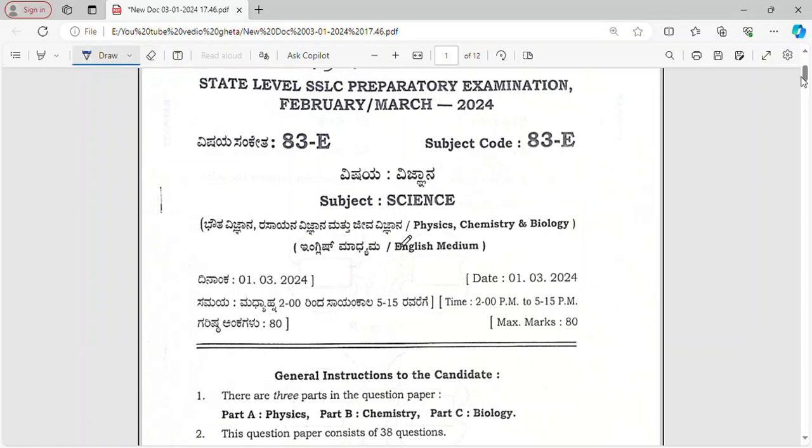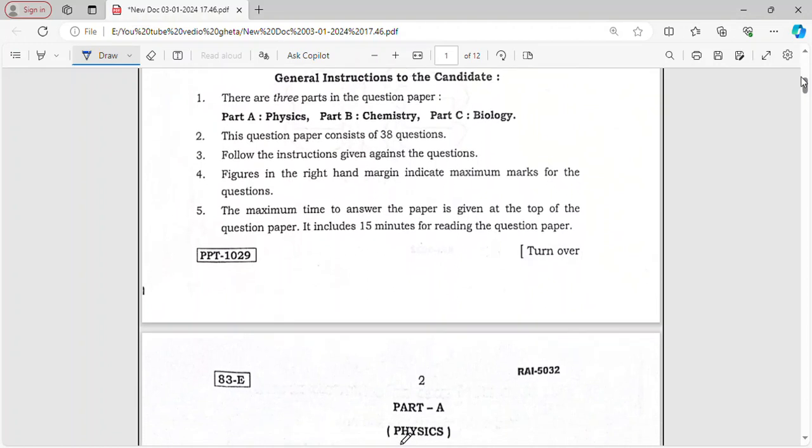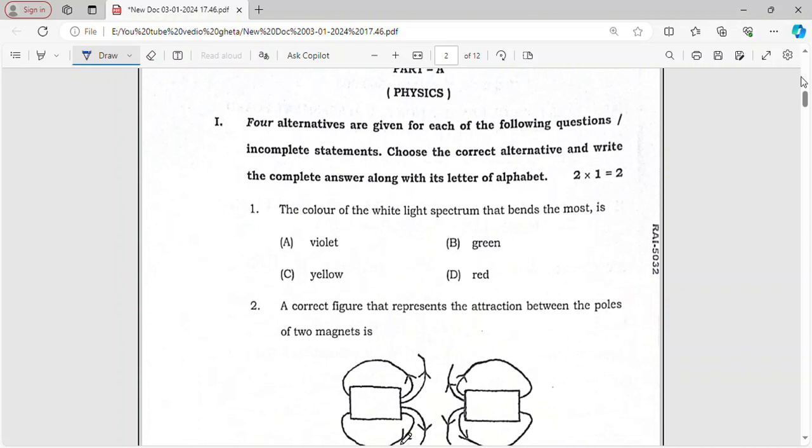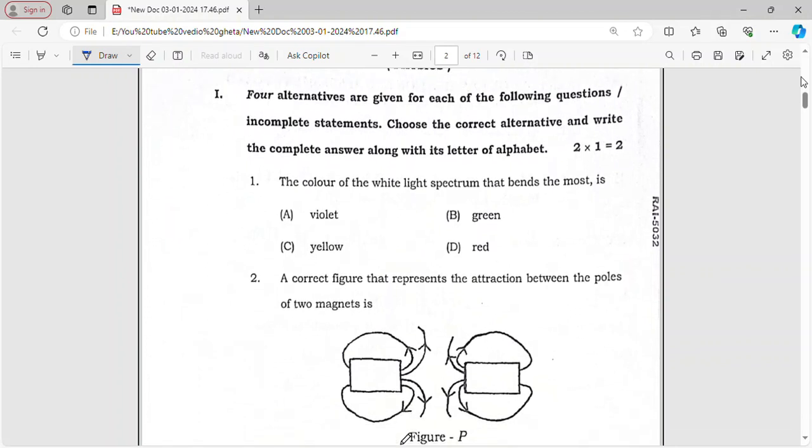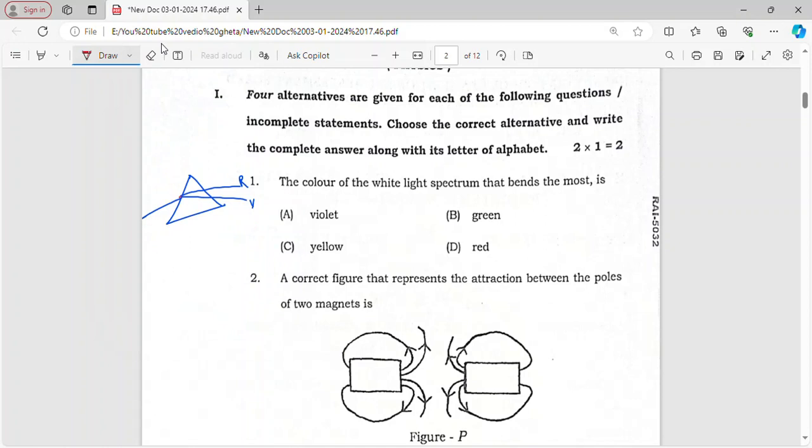Let's begin. In this video we will discuss the MCQs and one-mark questions of physics, chemistry, and biology. The color of white light spectrum that bends most - the light which bends most is the violet at the bottom, red at the top. The one which is bent is violet color.